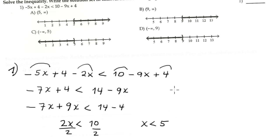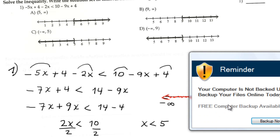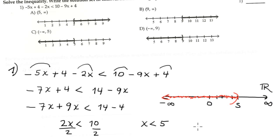The graphical representation: on the number line with negative infinity on the left and positive infinity on the right, zero in the middle. Count to positive five. Since it's less than, shade to the left and do not include 5 because there's no equal sign. In interval notation, this is from negative infinity comma 5, parenthesis parenthesis. This corresponds with option C.